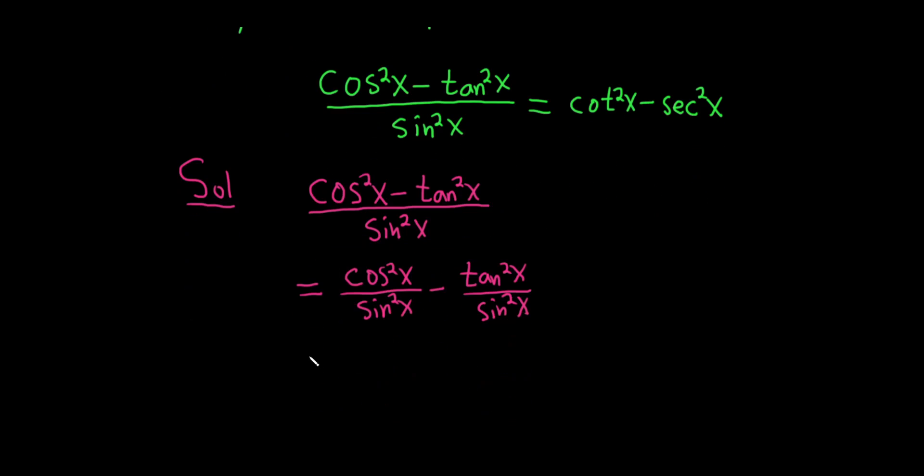So we can write this as cotangent squared of x. And now here, just to show a little bit more work for this piece, this should be secant squared. So let's break it up as follows. Let's write it as tan squared is really sine squared over cosine squared.